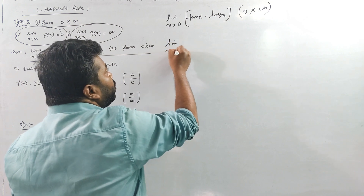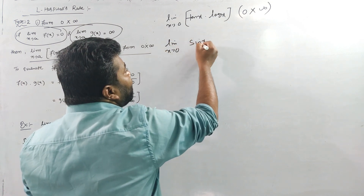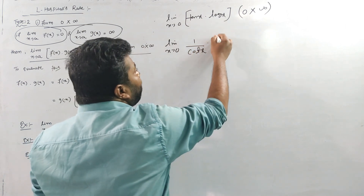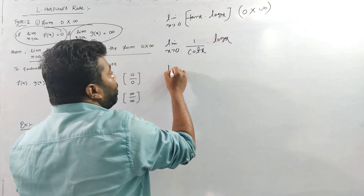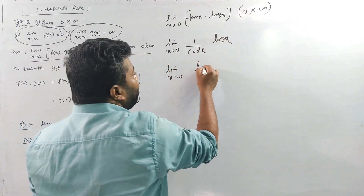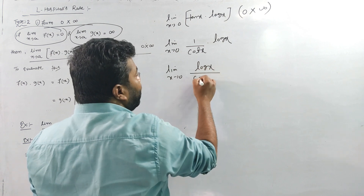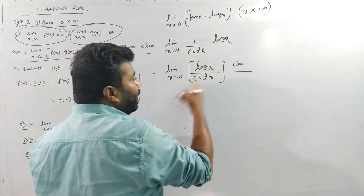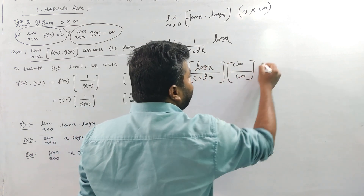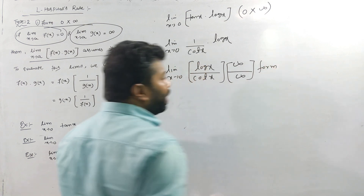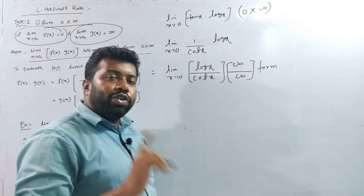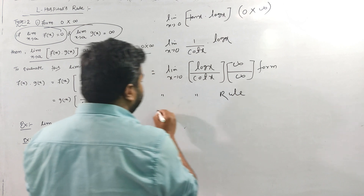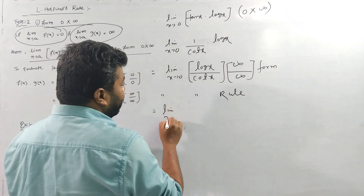We rewrite the expression: limit as x tends to 0 of log(x) divided by cot(x). As x→0, log(x) tends to negative infinity and cot(x) tends to infinity, so this is now an ∞/∞ form. We can convert it to either 0/0 or ∞/∞ form, so we apply L'Hôpital's rule.